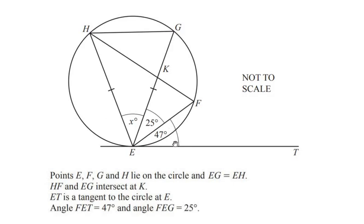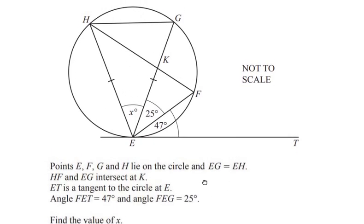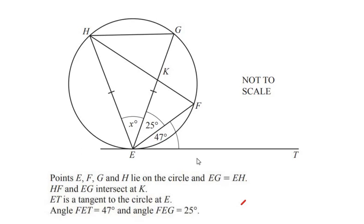Angle FET is 47 degrees, and angle FEG is given as 25 degrees. Find the value of x. To begin with, let us consider the chord which is inside the circle, EG, and the tangent ET. We have a circle theorem for the chord connecting to the tangent which is given as alternate segment theorem.